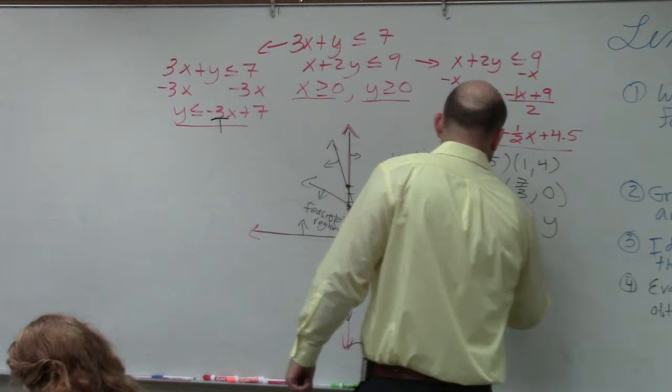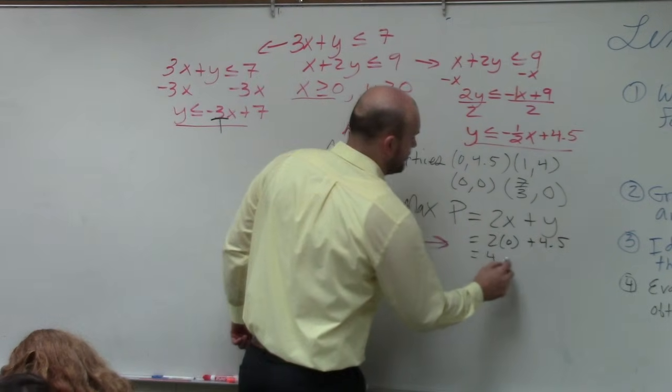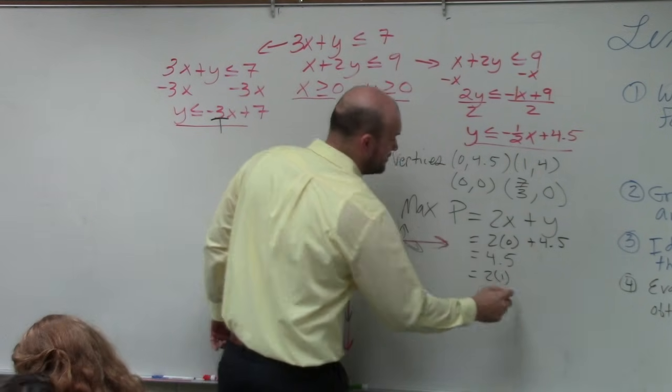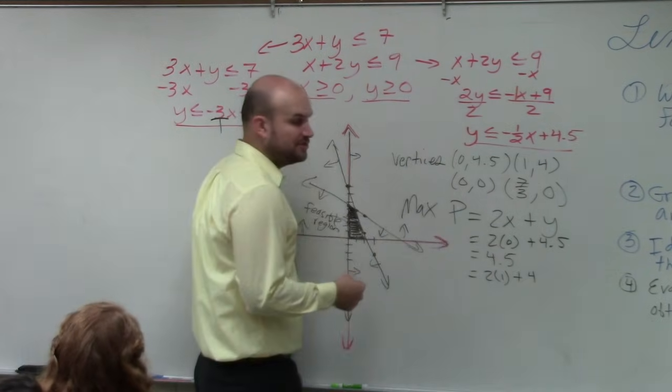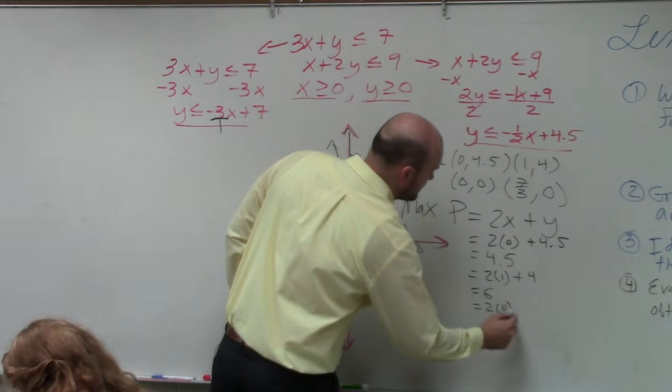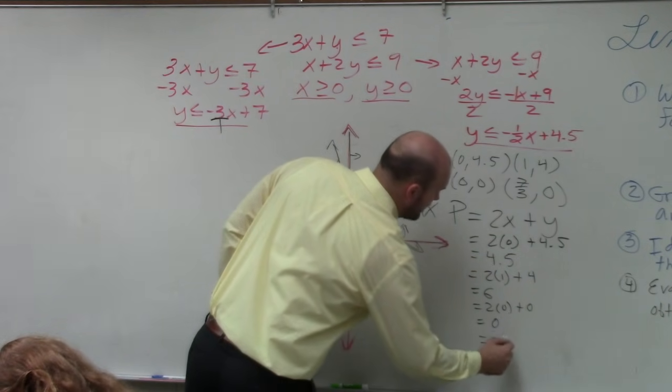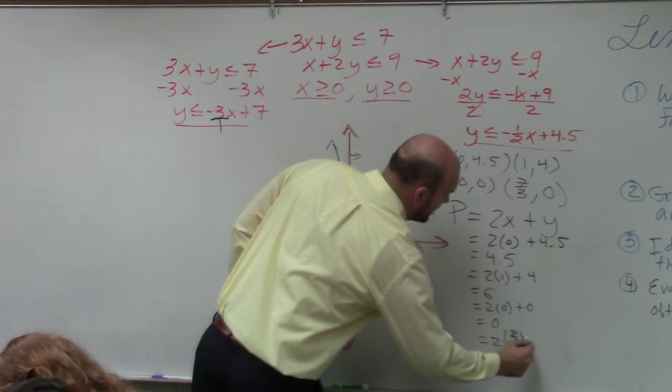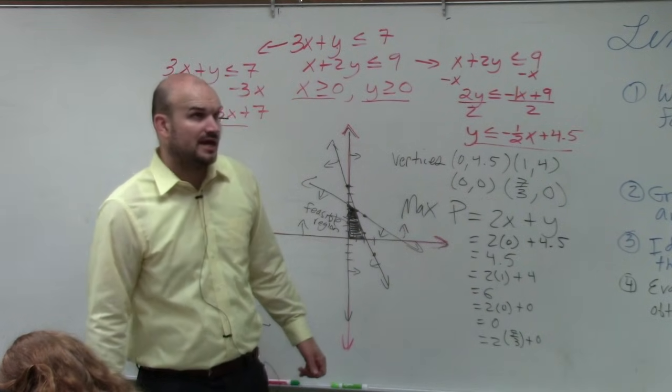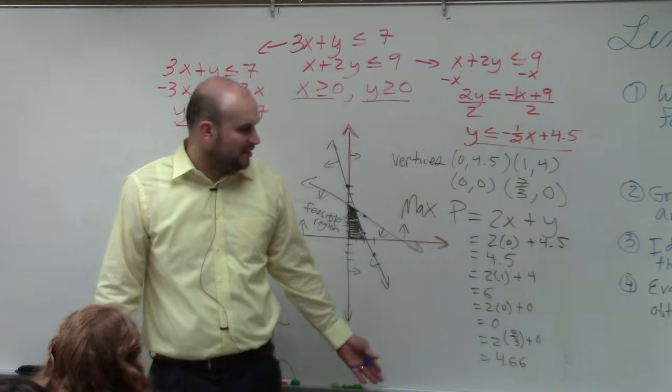So let's do the first point. First point will be 2 times 0 plus 4.5. Well, that equals 4.5. Right? Next point is 2 times 1 plus 4. 2 times 1 is 2 plus 4 is 6. The next one is 2 times 0 plus 0. Well, that's just going to give you 0. And the last one is going to be 2 times 7 thirds plus 0. Well, 2 times 7 thirds is going to be 14 over 3, which would be 4 and 2 thirds, which is like 4.66 repeating.